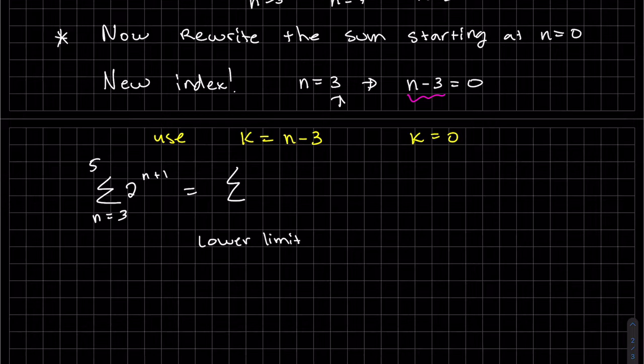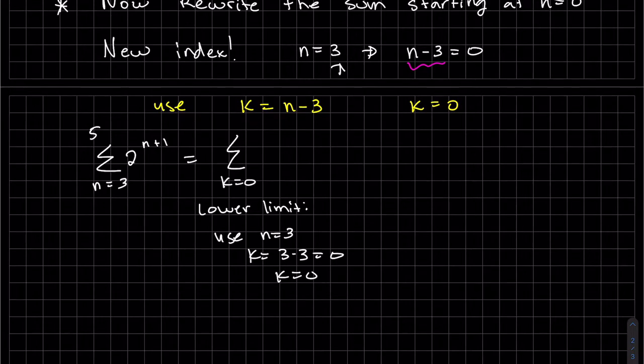So we are going to change for the lower limit. We have n equals 3 and we can plug in n equals 3 here. So we knew that. That's how we came up with this equation. But what about our upper limit? Again, this is 5.